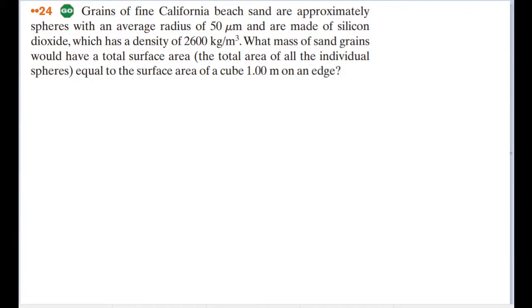Grains of fine California beach sand are approximately spheres with an average radius of 50 microns and are made of silicon dioxide, which has a density of 2,600 kilograms per cubic meter. What mass of sand grains would have a total surface area, the total area of all the individual spheres, equal to the surface area of a cube of one meter on an edge?